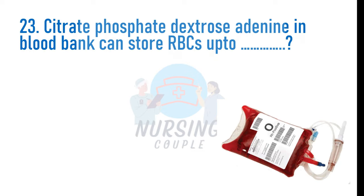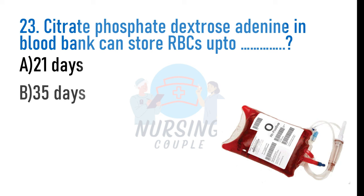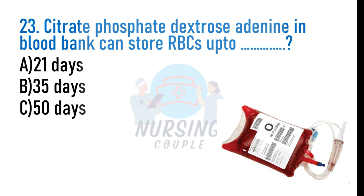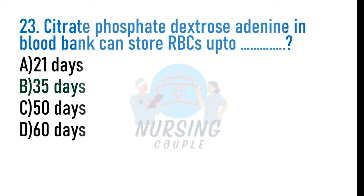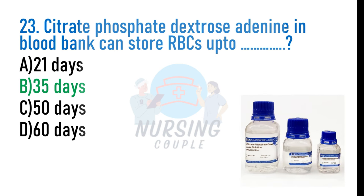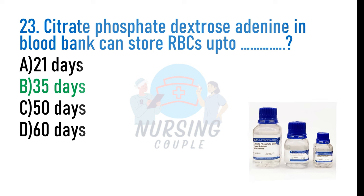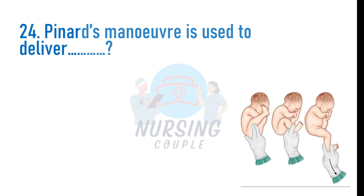Citrate phosphate dextrose adenine (CPDA) in the blood bank can store RBCs up to: A. 21 days, B. 35 days, C. 50 days, D. 60 days. The answer is Option B: 35 days. Anticoagulant citrate phosphate dextrose adenine solution contains citric acid, sodium citrate, sodium dihydrogen phosphate monohydrate, dextrose, adenine, and water for injection. It is used for preservation of whole blood and packed RBCs up to 35 days.